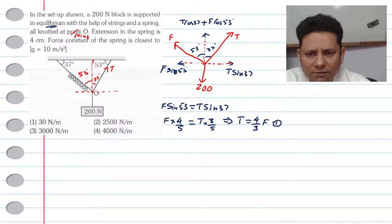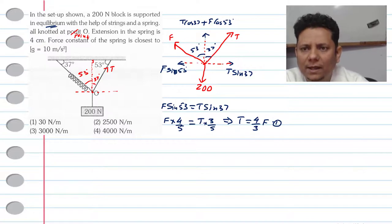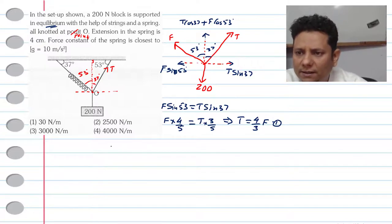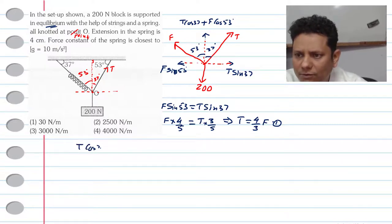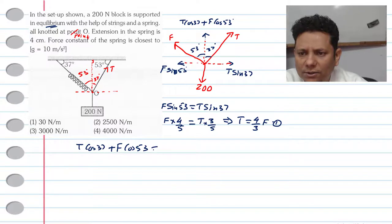Now for vertical direction equilibrium, we can write T cos 37° plus F cos 53°, and this should be equal to 200.